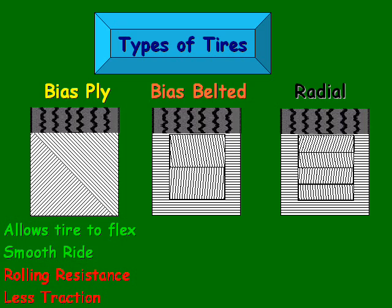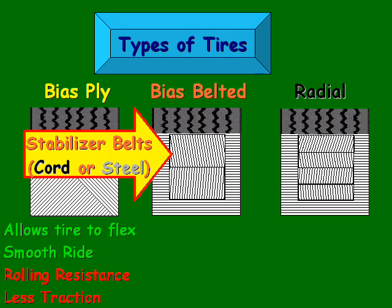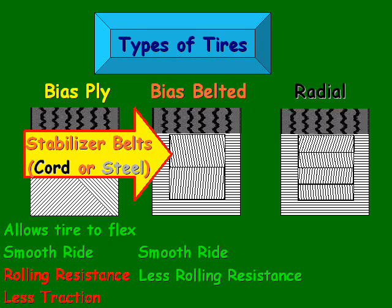Now let's take a look at the positives and negatives of the bias belted tire. Remember, we have these stabilizer belts that are typically made of either cord or steel. That construction provides for a smoother ride than the bias tire, and there's less rolling resistance due to the belts that increase the tread stiffness. However, it can typically ride harder than the bias ply tires.